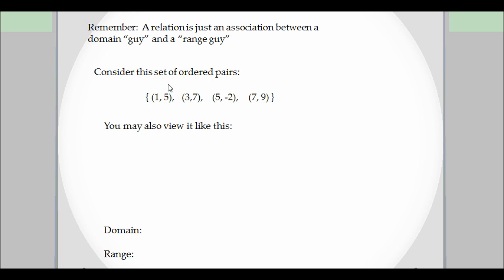I said here, remember that a relation is just an association between a domain guy and a range guy. So you've got a domain guy and a range guy. So sometimes we actually look at ordered pairs. Remember, these are points on a graph. And the first one, if you remember how points on a graph work, is an ordered pair, x and a y. And remember that we're associating x with your domain and y is your range. Input, output.